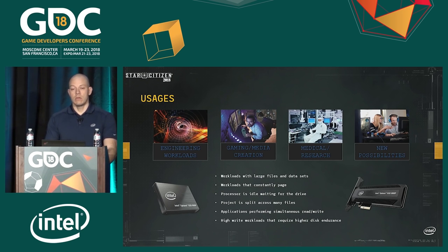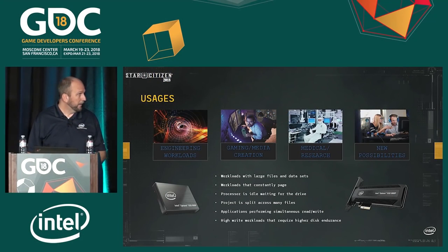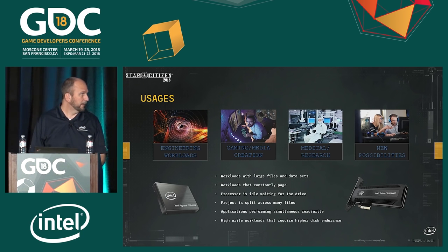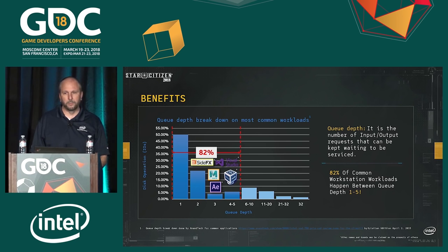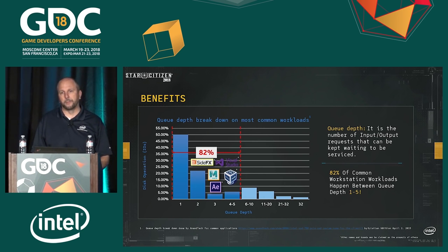I'll pass it over to Nate to talk more about the benefits. At the end of the day, the question is: why should you care? To explain that, I have to go into the concept of queue depth. All the IOs that go through a system go through a storage queue. With SATA, you've got a single queue, which generally isn't a big deal because the drive is relatively slow. But when you move into an NVMe or PCIe device, you've got a queue for each core in your system.